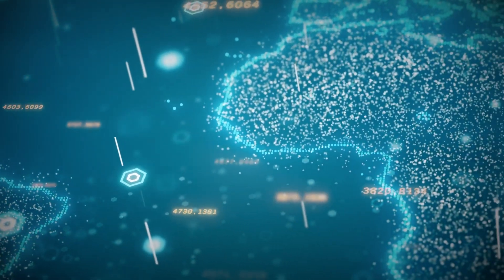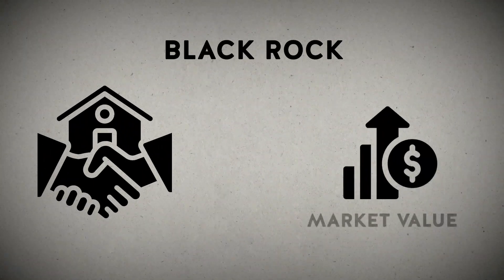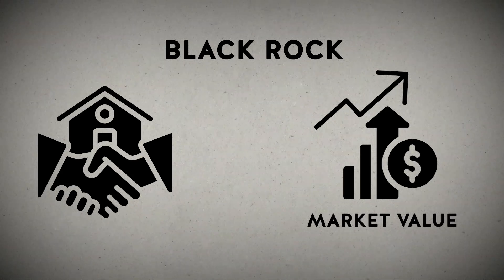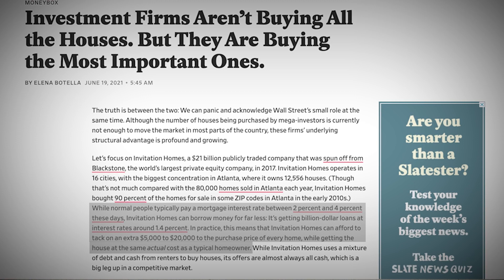For example, in many neighborhoods across the country, BlackRock has been seen buying up homes at a record pace, often paying substantial amounts more than fair market value. According to Slate.com, this is because while normal people typically pay a mortgage interest rate between 2% and 4% these days, Invitation Homes can borrow money for far less. It's getting $1 billion loans at interest rates around 1.4%. In practice, this means that Invitation Homes can afford to tack on an extra $5,000 to $20,000 to the purchase price of every home while getting the house at the same actual cost as a typical homeowner.